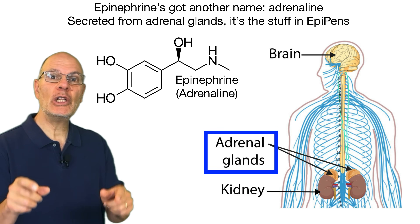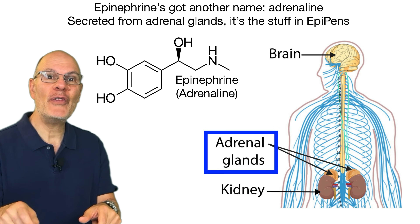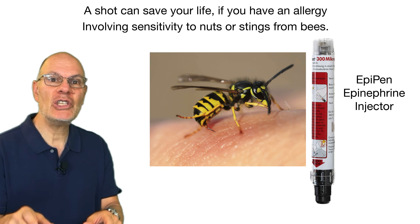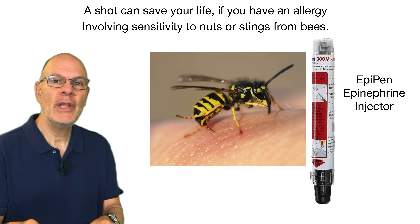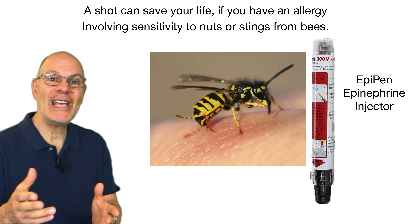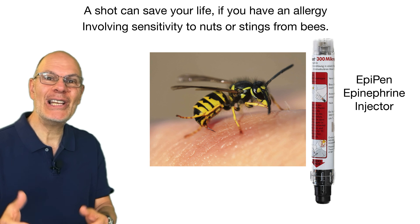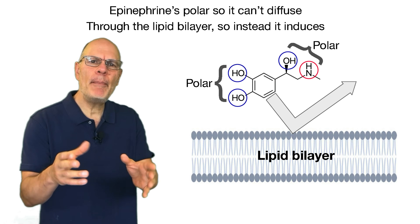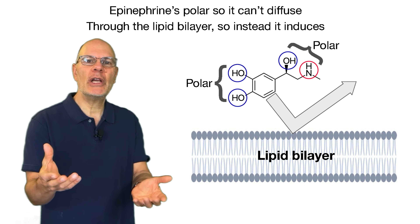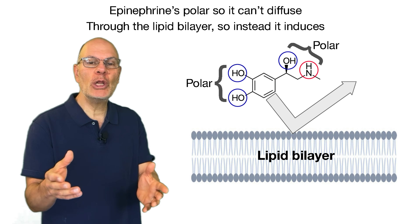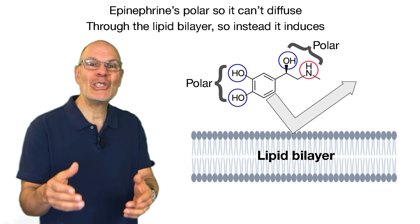Secreted from adrenal glands, it's the stuff in EpiPens — a shot can save your life if you have an allergy involving sensitivity to nuts or a sting from bees. Epinephrine is polar, so it can't diffuse through the lipid bilayer.